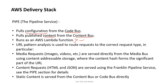Pipeline services run as an AWS Lambda function. I highly recommend checking what a Lambda function is — let me know in the comments if I should create a video for it. Lambda function also provides edge serverless computing. It's a kind of front-end framework running on AWS Lambda. URL pattern analysis is used to route requests to the correct request type, which I'll talk about in my next videos.